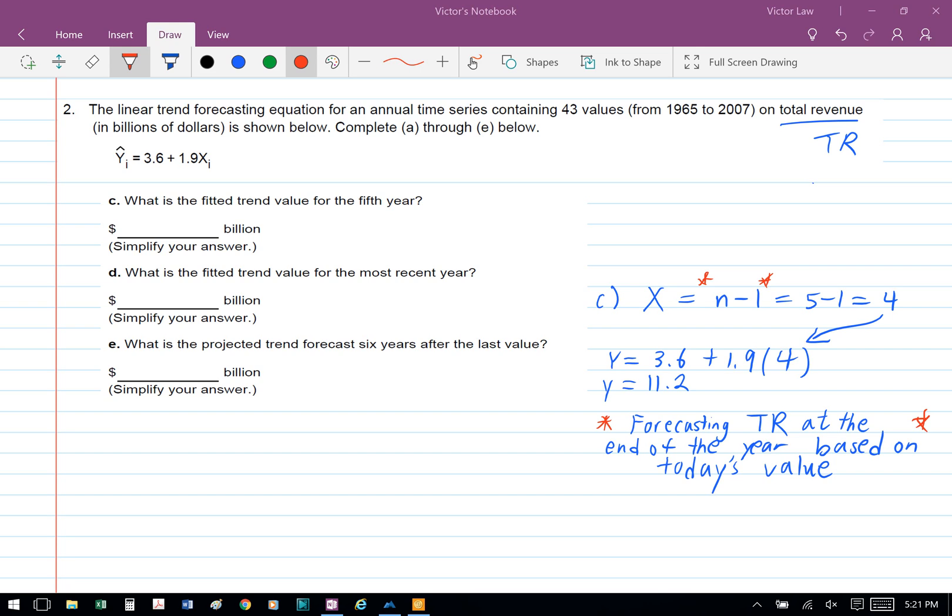The reason we're using n minus 1 is because we're trying to forecast the year 5 total revenue based on year 4's number.